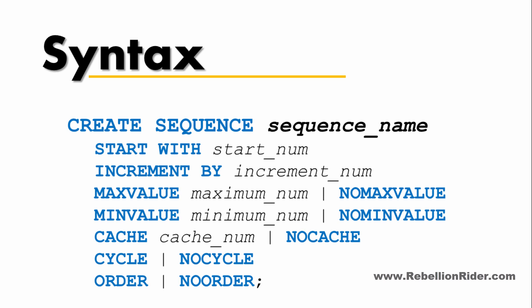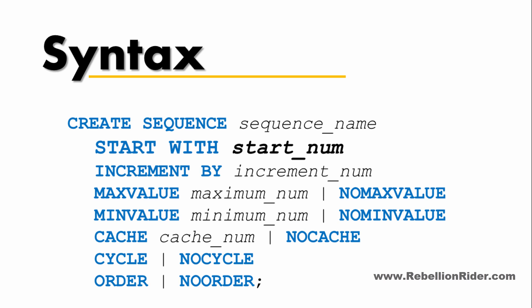Next we have a few attributes of the sequence. The first attribute is START WITH. Here you have to specify a numeric value from which you want your sequence to start. Whatever number you specify will be the first number generated by your sequence.